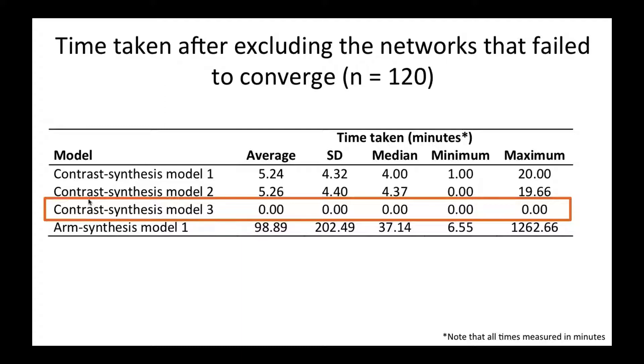The frequentist contrast synthesis model 3, all of the networks ran in less than a minute. The two contrast synthesis models 1 and 2, the contrast-based likelihood models, took a median of about four to four and a half minutes, and the most complicated network took about 20 minutes to run.